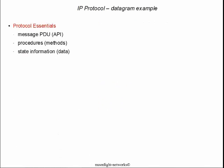Internet Protocols really have three essential elements. The first part of the protocol is the message PDU. In today's discussion, we're going to use an IP datagram as our message PDU. That is equivalent to an API in a programming call — it's a way of passing a data structure from one system to another to invoke procedures or an expected outcome.